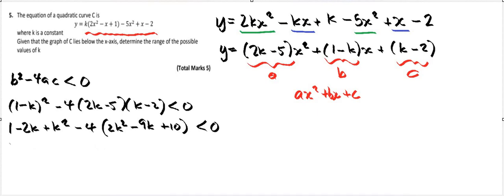Right, okay, all this together. So I've got 1 minus 2k plus k squared minus 8k squared plus 36k plus 36k minus 40, all less than zero. Now let's again collect our like terms together because we've got k squared, k squared, and I've got k and k.